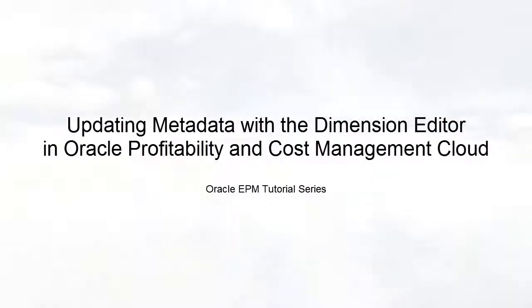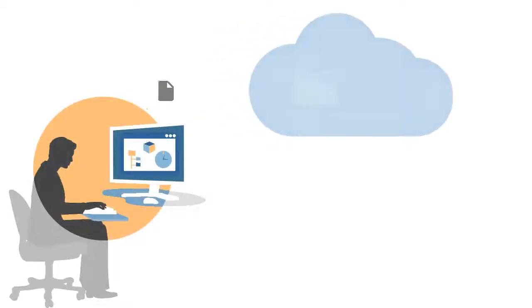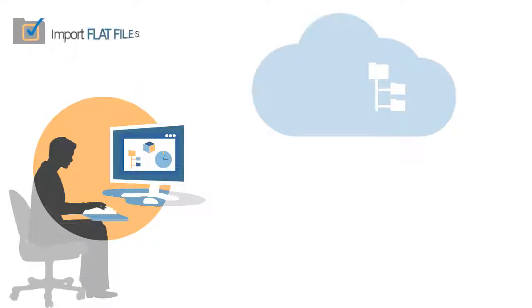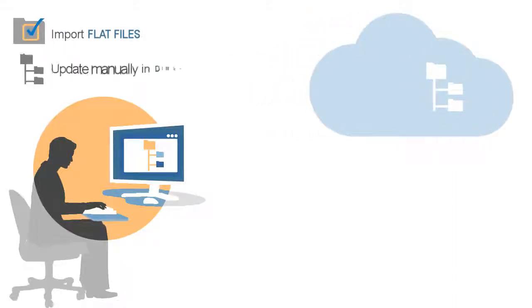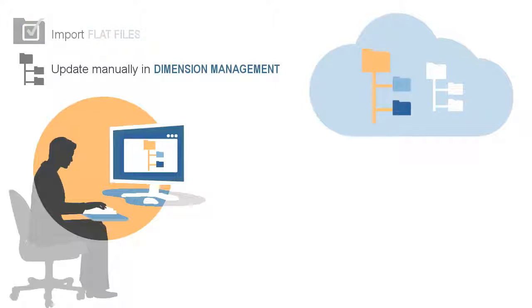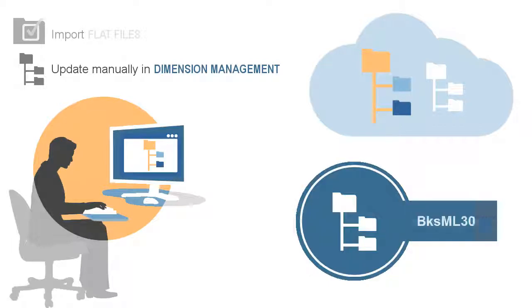Welcome to this step-by-step tutorial on updating dimension metadata using the Dimension Editor in Oracle Profitability and Cost Management Cloud. You can add or update dimension metadata in a new or existing application by importing flat files. You can also edit dimensions manually in Dimension Management. In this tutorial, we'll concentrate on updating dimensions manually. We're working with the existing sample application, but dimension editing procedures are the same for custom applications.